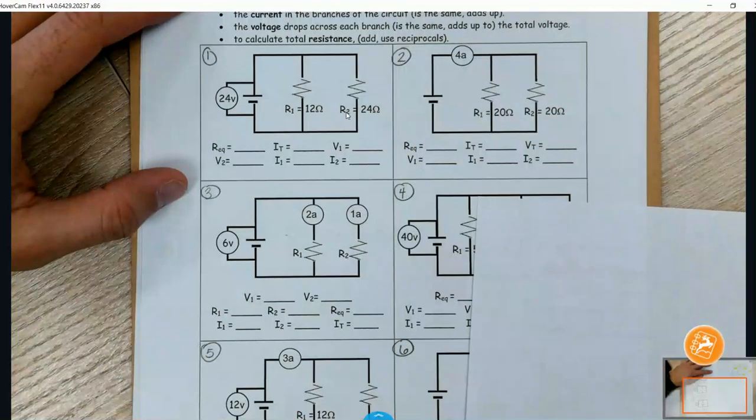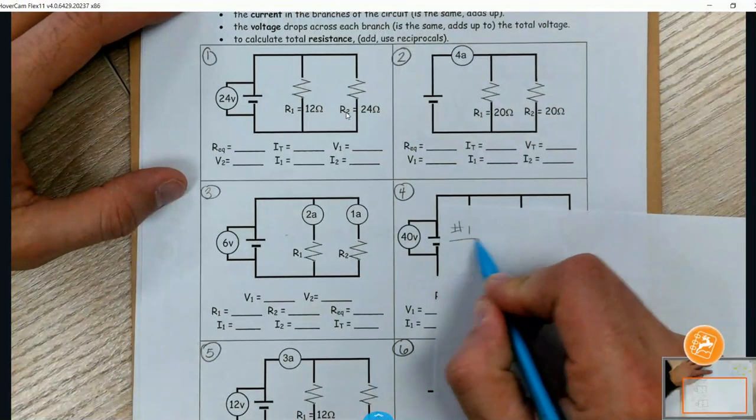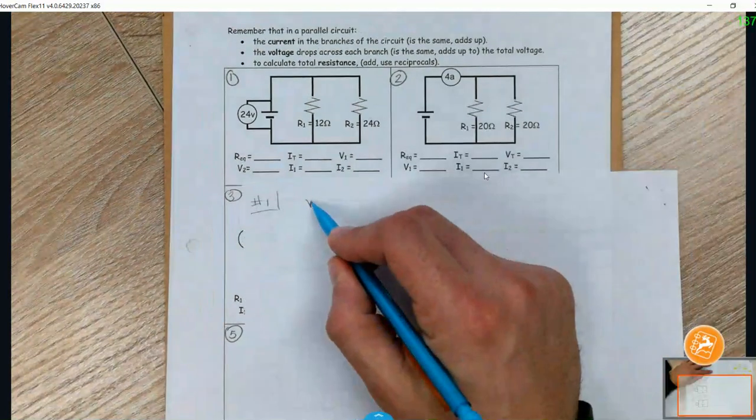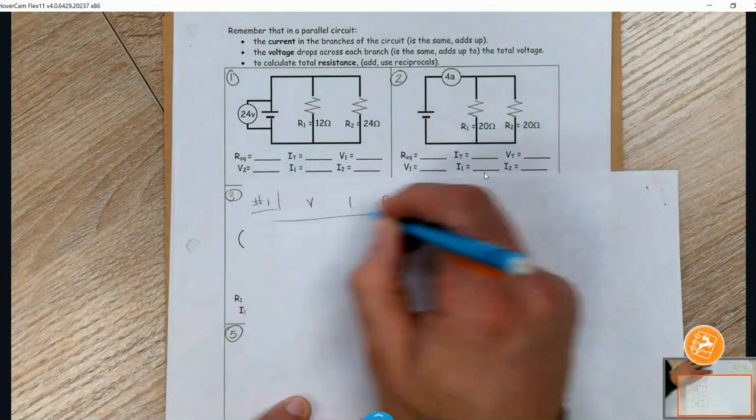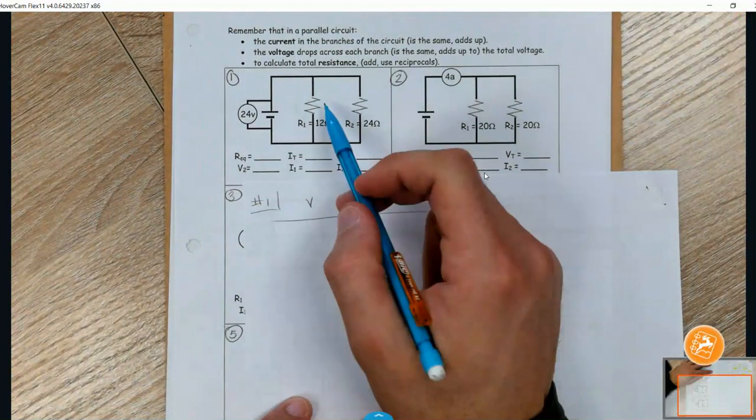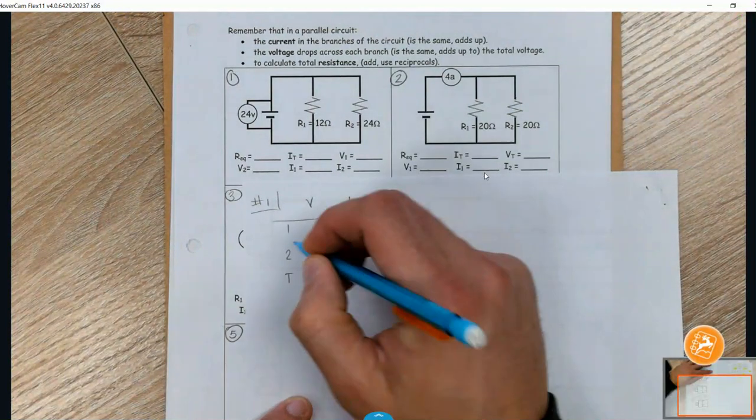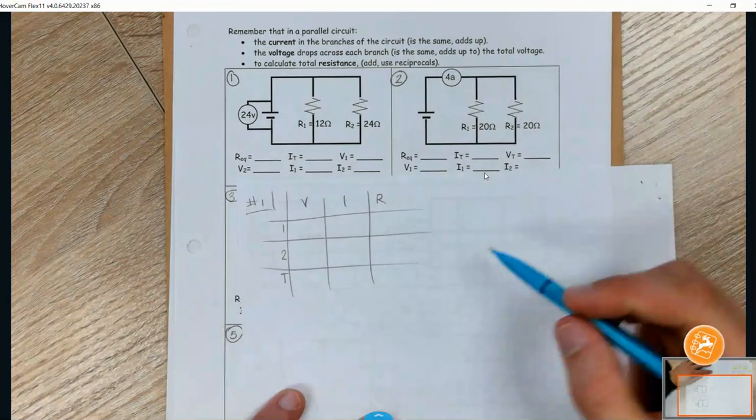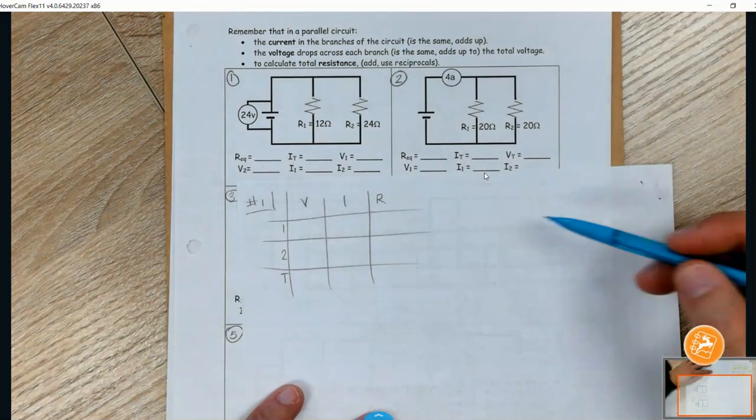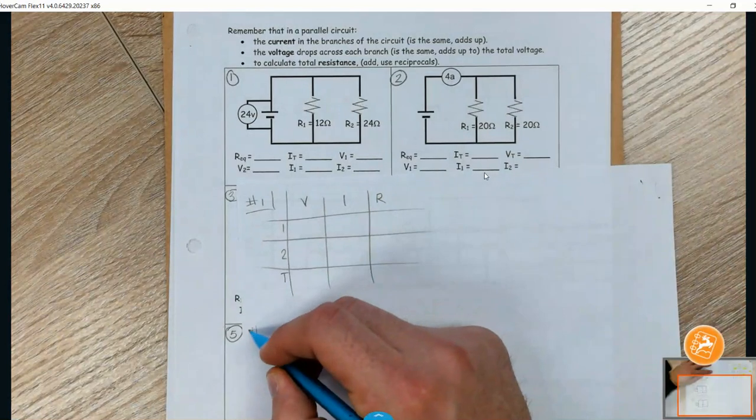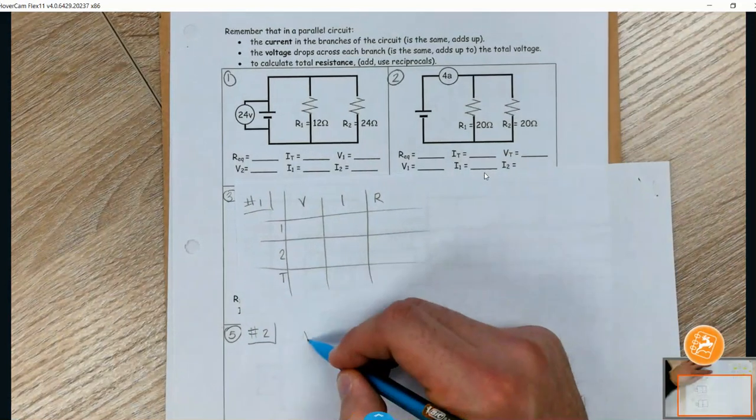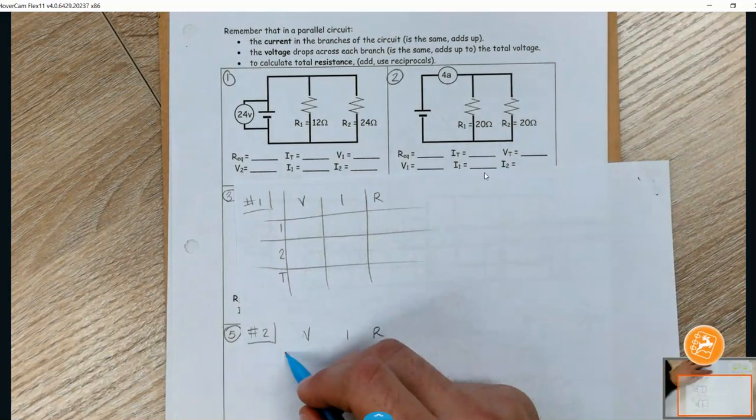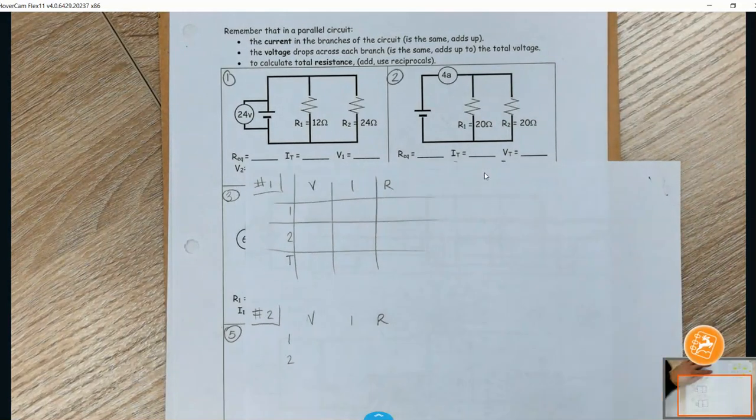I'm going to leave some room here for number one. You can have room for your VIR table. There are one, two resistors and then we need one for total. And then you can do the excess work over here, but for number two, which is the one we're going to look at. We're making our VIR table. There are one, two resistors, so we're going to make one, two rows and then we need a third one for the total.